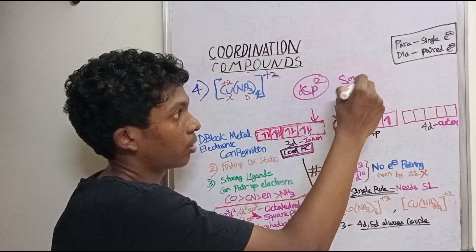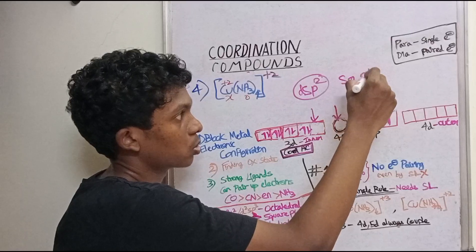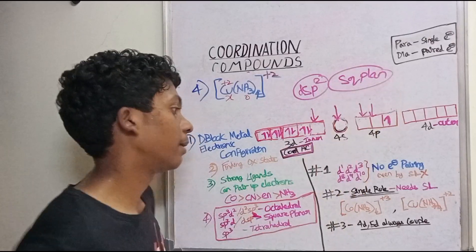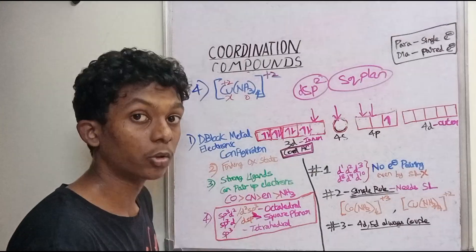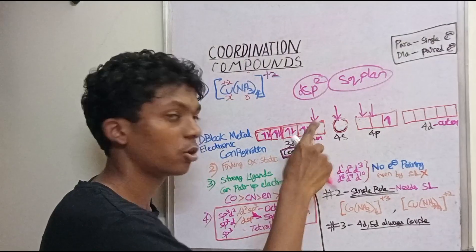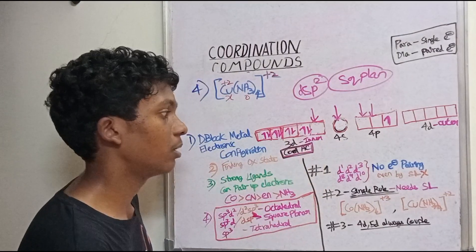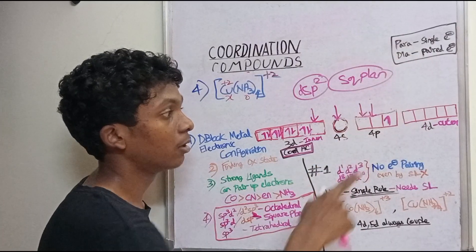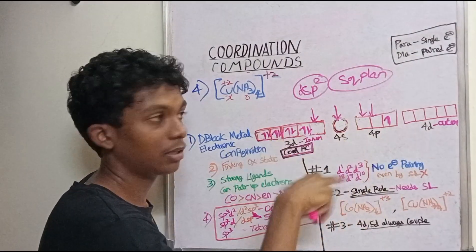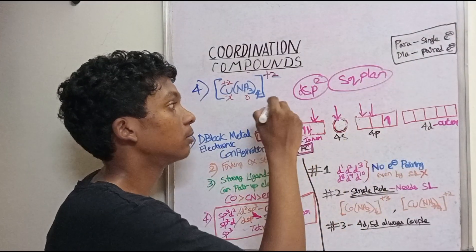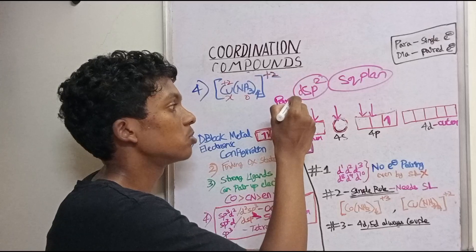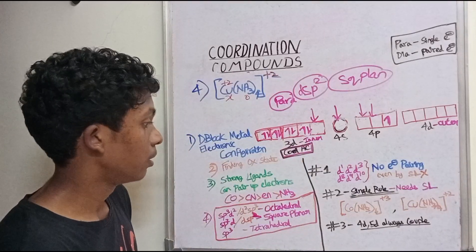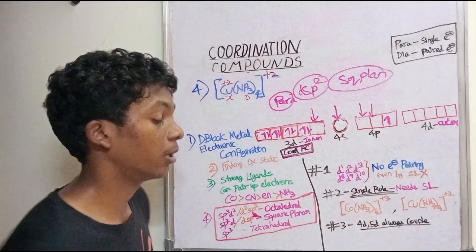dsp² gives a square planar geometry. This is an inner orbital complex. Since all electrons are paired, it is diamagnetic.